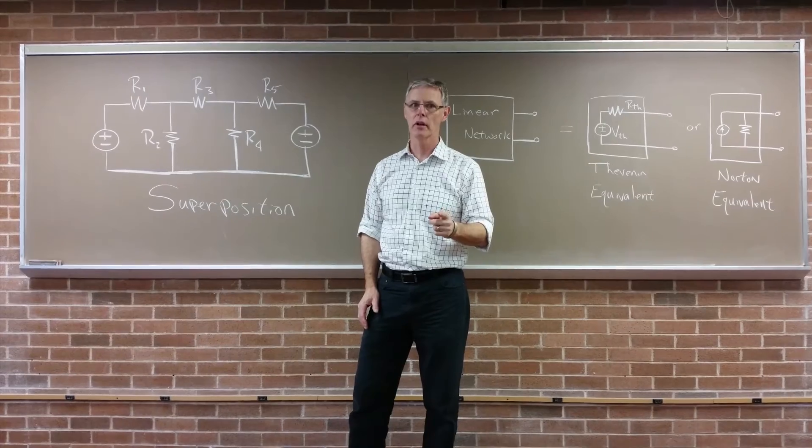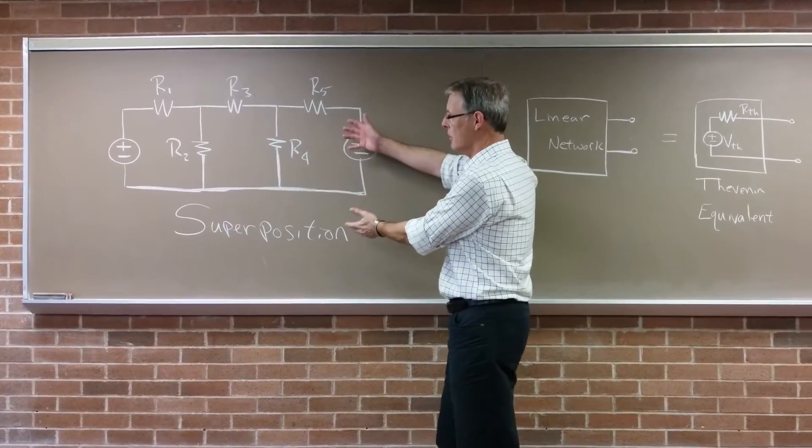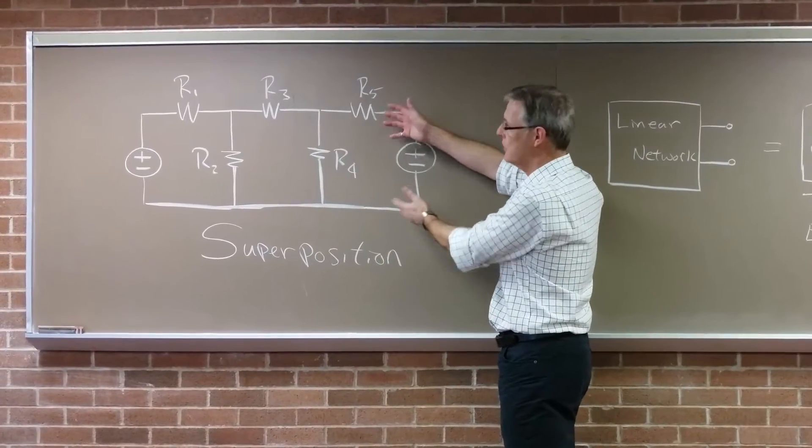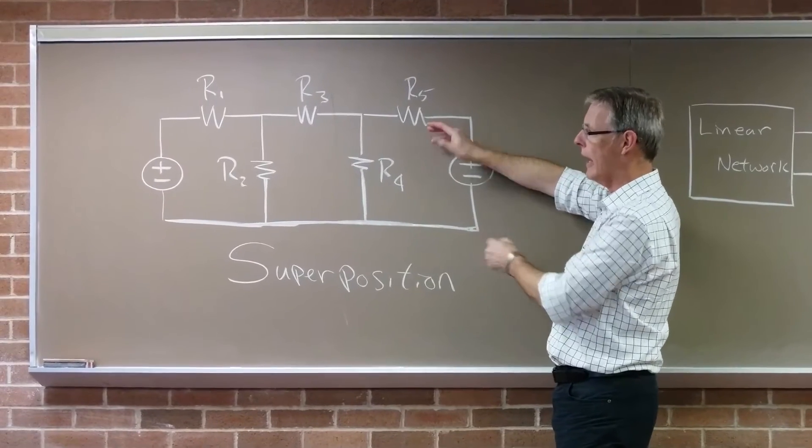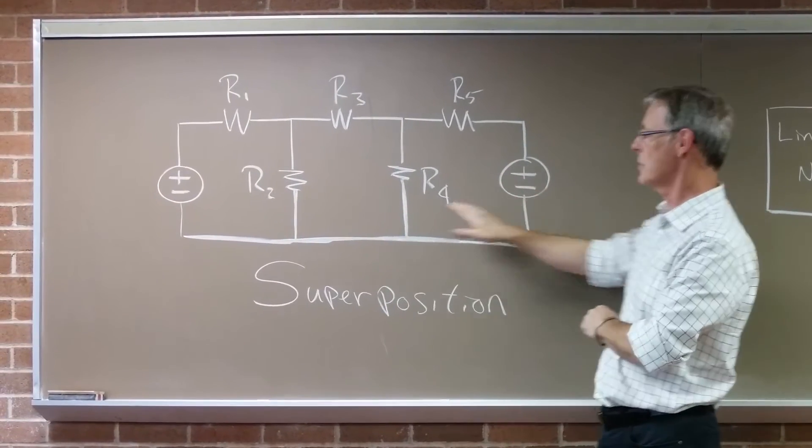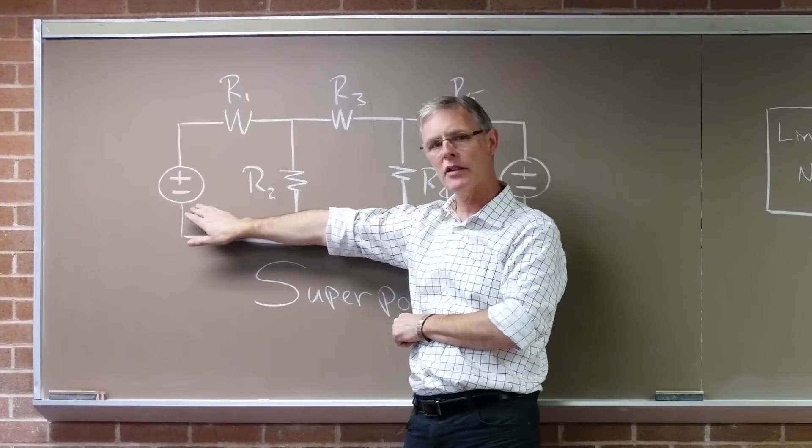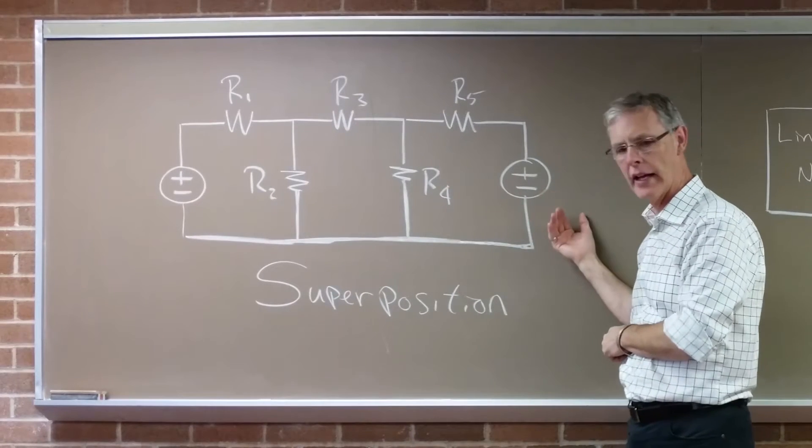The first one is superposition. We're going to use a circuit that's very similar, very familiar to you. You've seen this circuit before, and it's supplied by two sources. There's going to be a voltage source on the left-hand side, and a voltage source on the right-hand side.